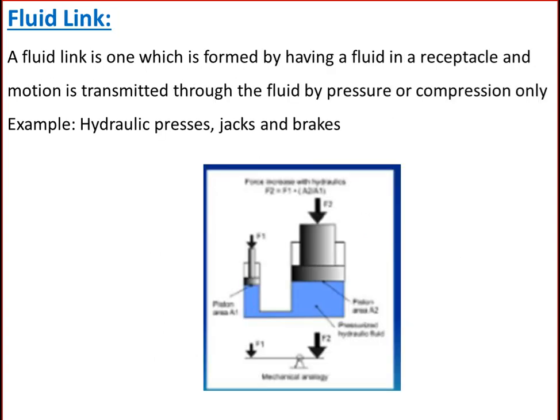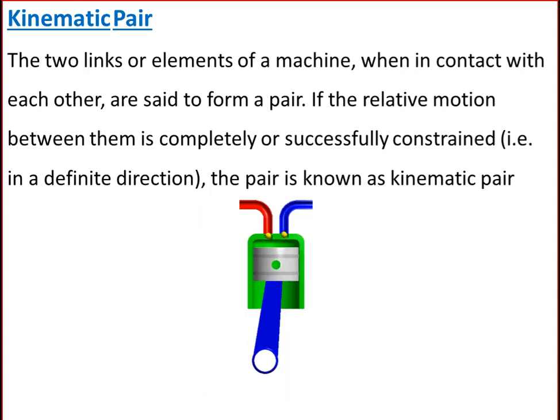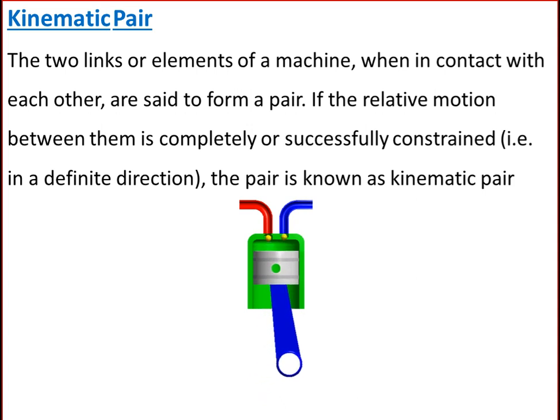The last type of link is a fluid link. A fluid link is one which is formed by having a fluid in a receptacle, and the motion is transmitted through the fluid by pressure or compression only, as in the case of hydraulic presses, jacks, and brakes.